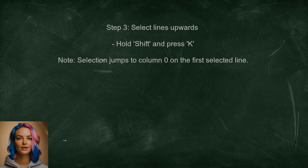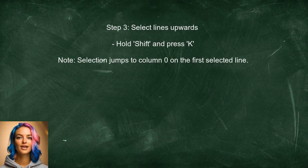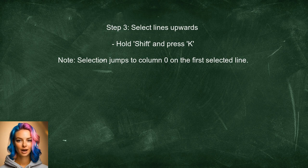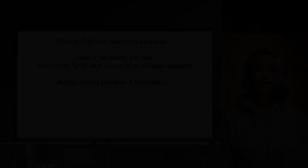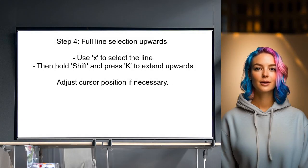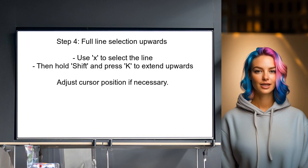Now, to select lines going upwards, hold down the Shift key and press K. However, it's important to note that this will not select the entire line, as the selection will jump to column 0 on the first selected line. To achieve a full line selection while going upwards, use the X key to select the line, then use Shift+K to extend the selection upwards, adjusting the cursor position if needed.